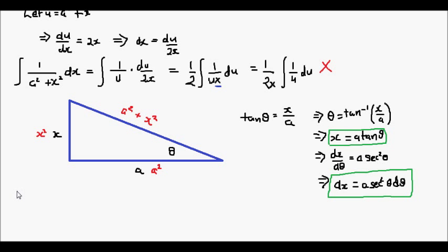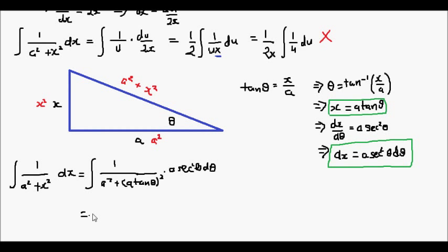So let's do that. So the integral of 1 over a squared plus x squared dx is equal to 1 over a squared plus a tan θ all squared, multiplied by a sec squared θ dθ. Alright, now tidying up a little bit.